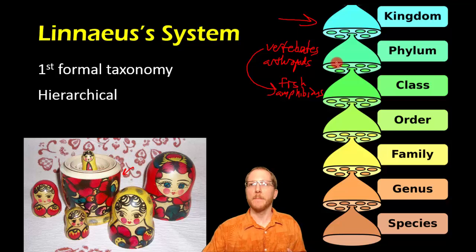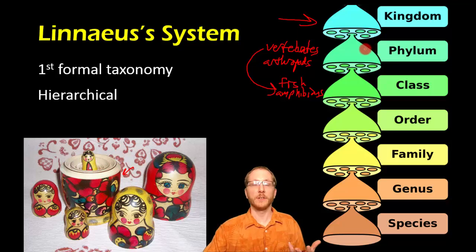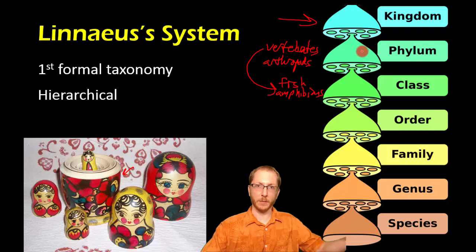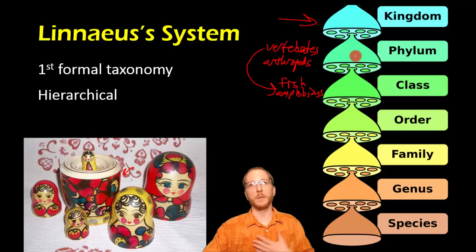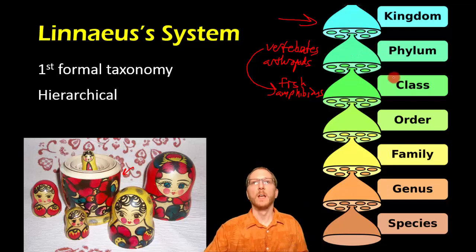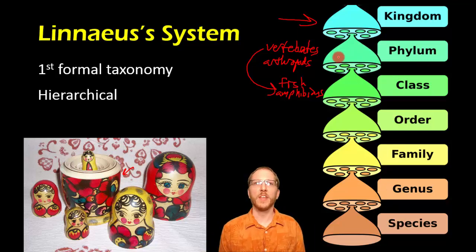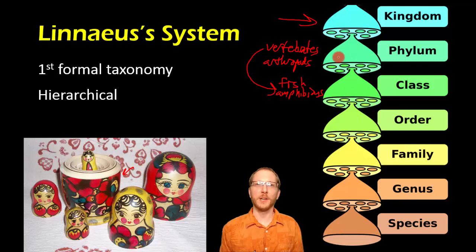When you try to memorize this, it's good to use a mnemonic, because you do need to understand the basic levels: kingdom is the most broad, species is the most specific. Some people use 'King Philip came over for great spaghetti.' There are lots of slightly more risque versions — you can make up your own.